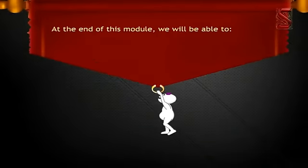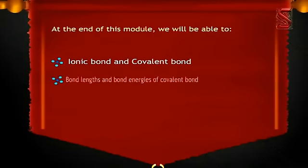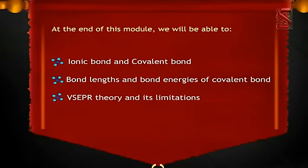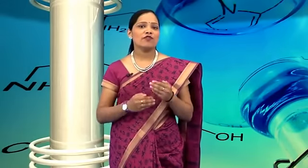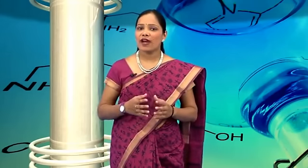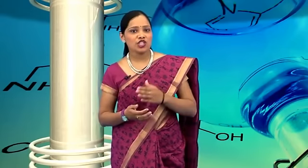At the end of this module, we will learn about ionic bond and covalent bond, bond lengths and bond energies of covalent bond, and VSEPR theory and its limitations. Atoms always try to have a full outer shell of electrons. In order to achieve this, they will bond with other atoms. When atoms bond together they form molecules — those made of one type of atom are elements, while those made of many types are compounds. Atoms may join together by either gaining and losing electrons, which is ionic bonding, or by sharing electrons, which is covalent bonding.